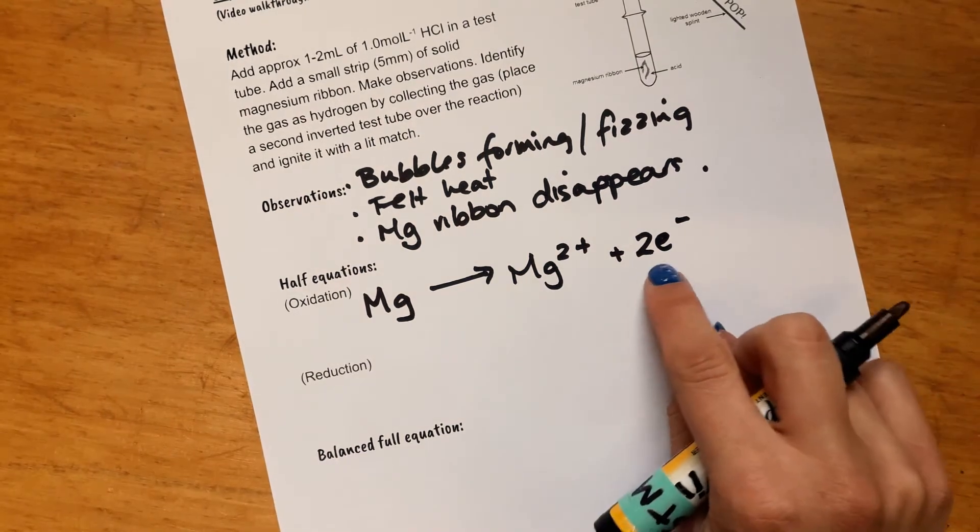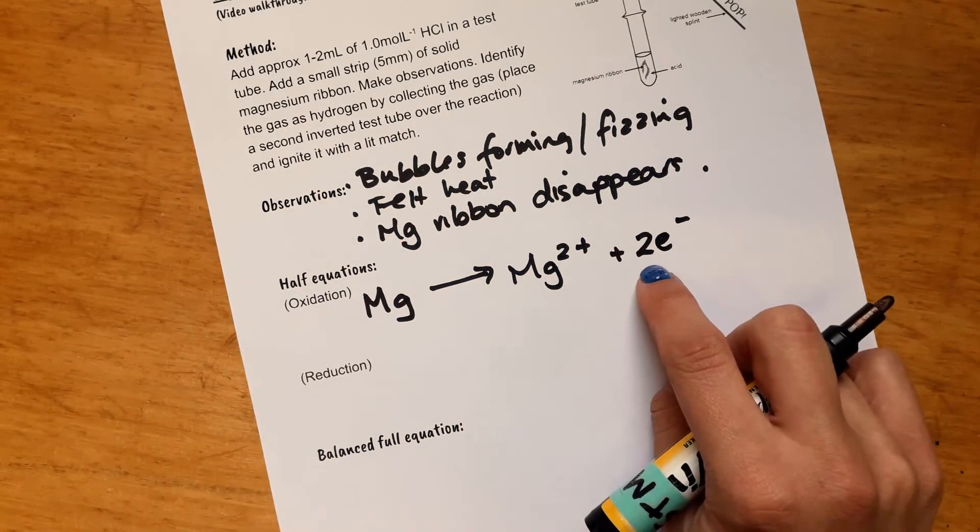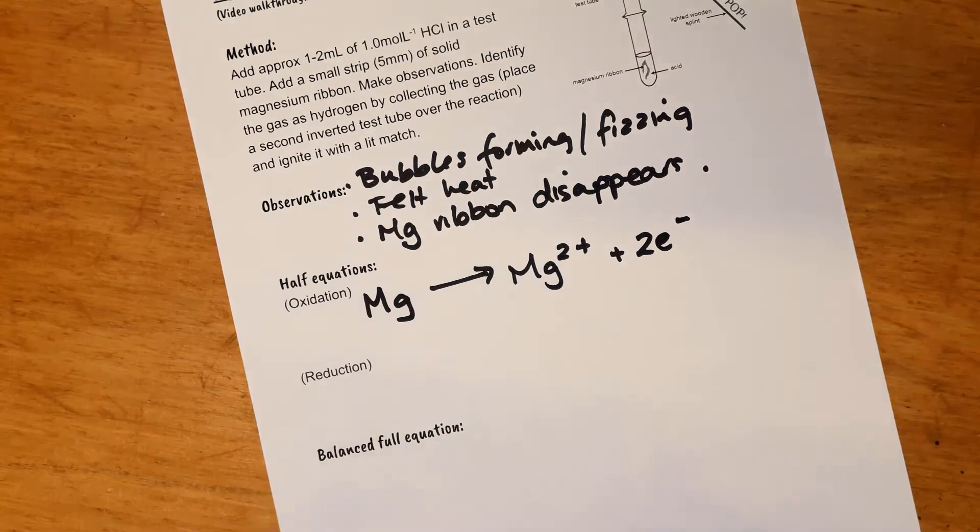So you know that if you have your electrons written here on the right hand side, that that is an oxidation reaction.